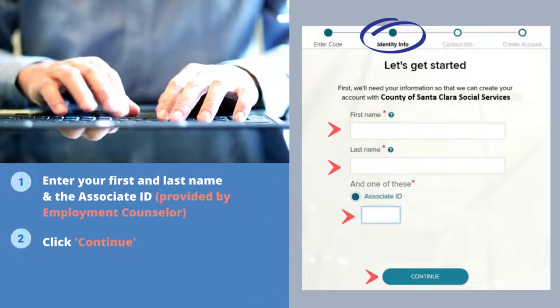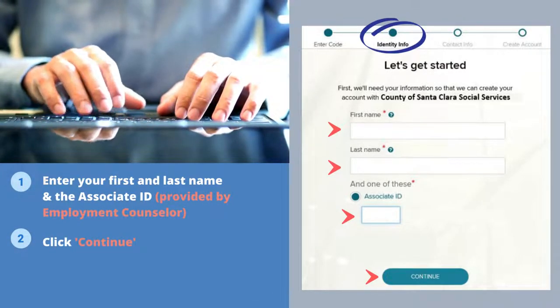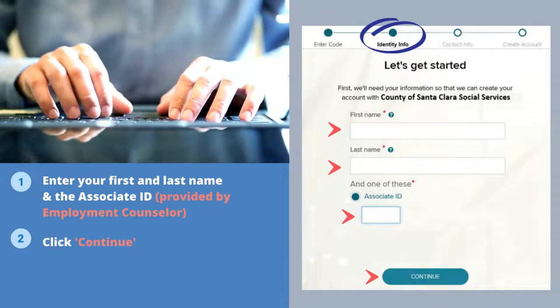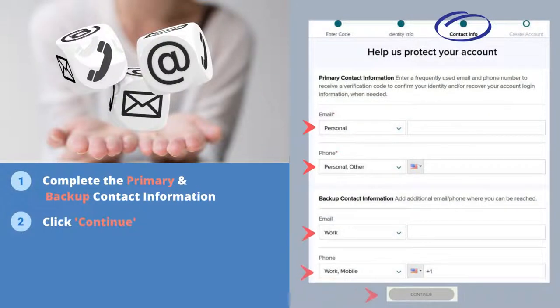Moving on to the identity information section, enter your first and last name followed by the associate ID, then click Continue. In the contact information window, enter your primary and backup information. This is important should you forget your password and need to regain access into your ADP account. Once completed, click Continue.